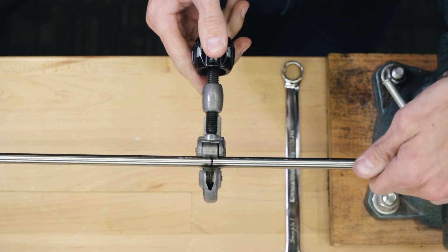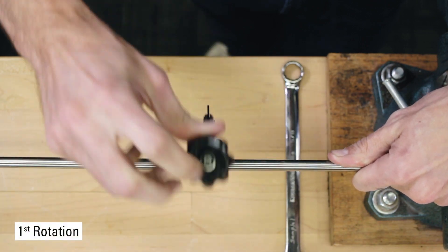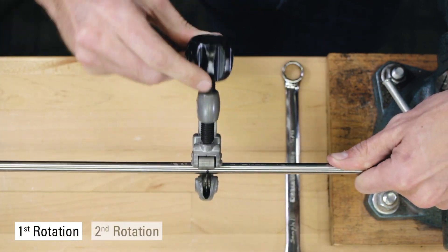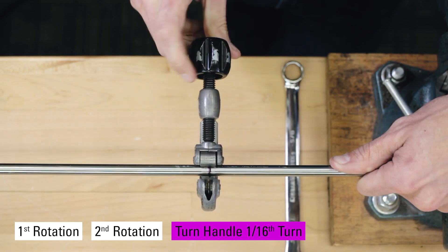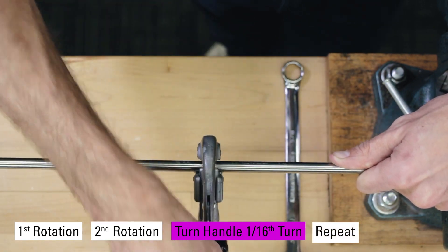After every second rotation, turn the handle about 1/16th turn until the tube is cut through.